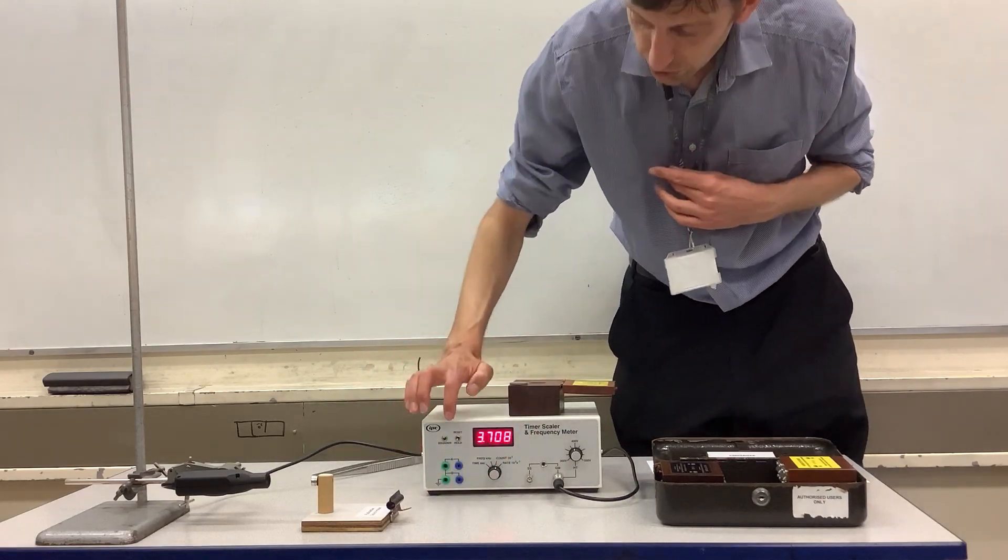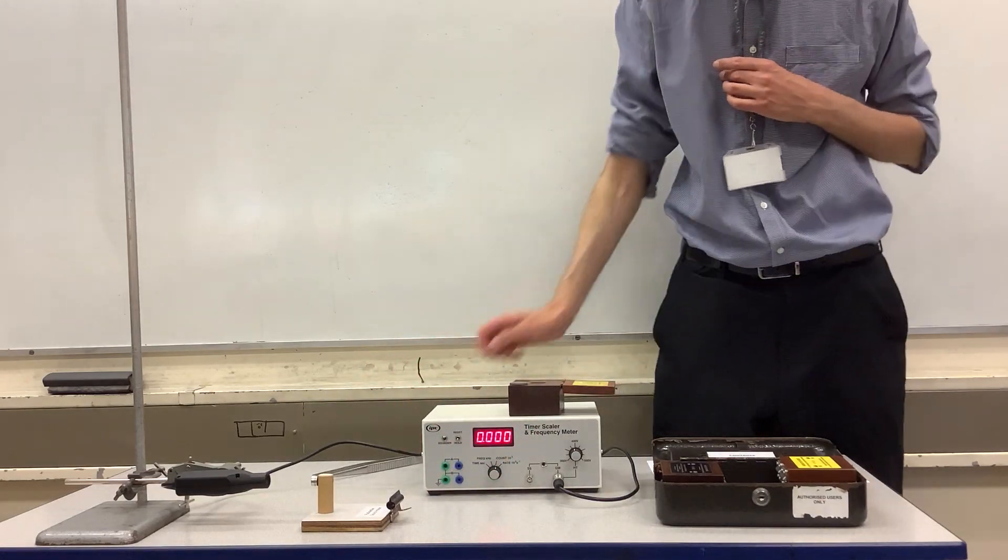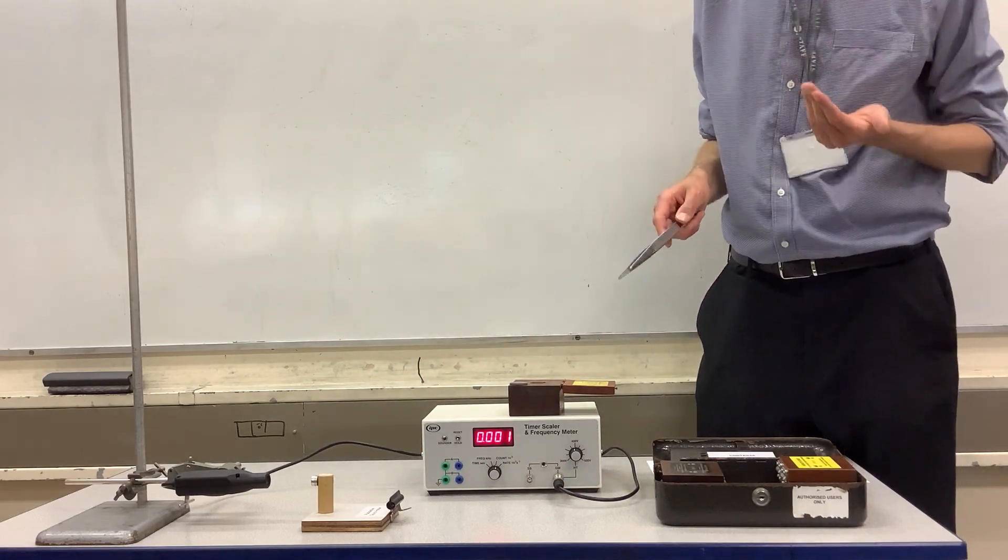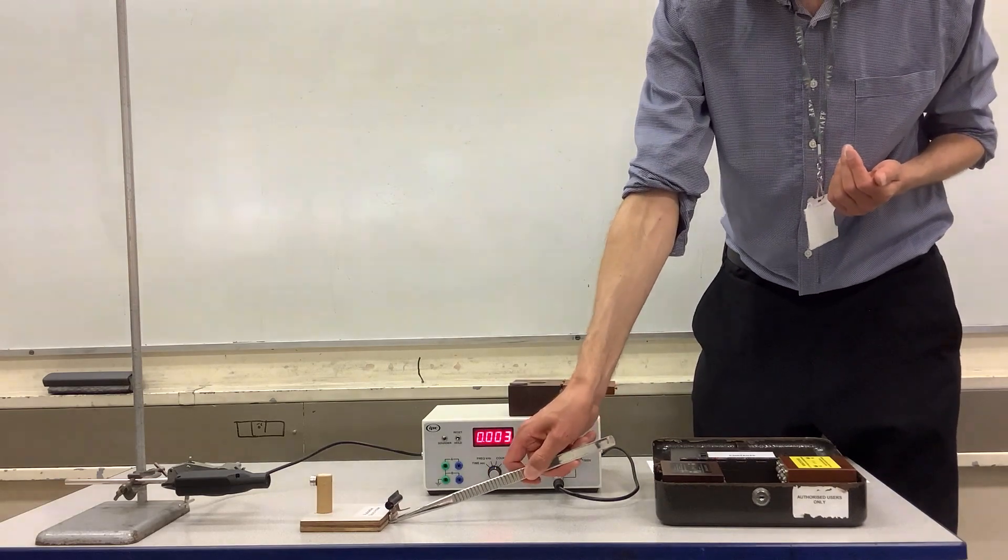So if I reset the counter, at the moment we can see that we're not detecting any alpha radiation from the source, and in order to detect it...